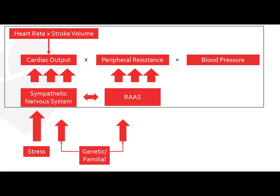Another consideration is genetic or familial factors. This could be due to ethnic background or salt sensitivity, which could lead to increased sensitivity to the sympathetic nervous system and the RAS. There are also factors that lead to vasoconstriction as we discussed before.